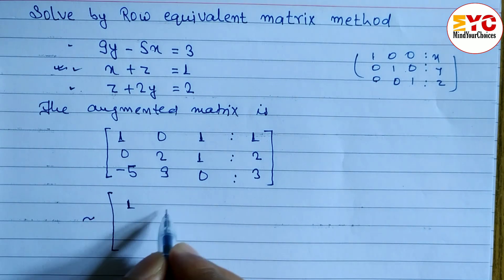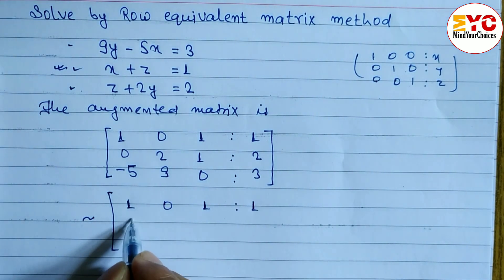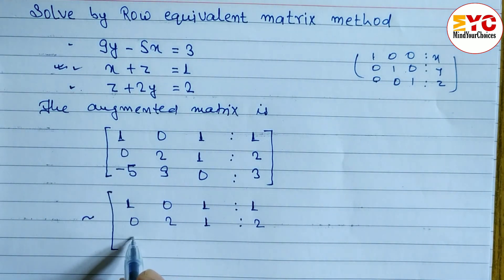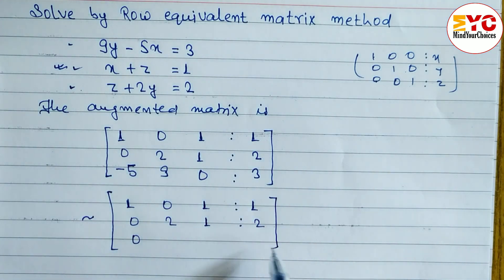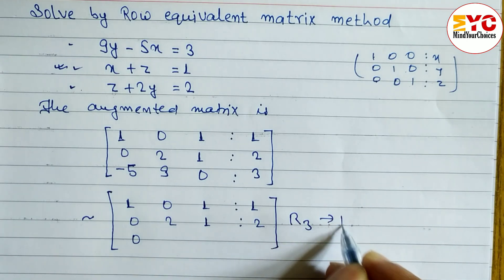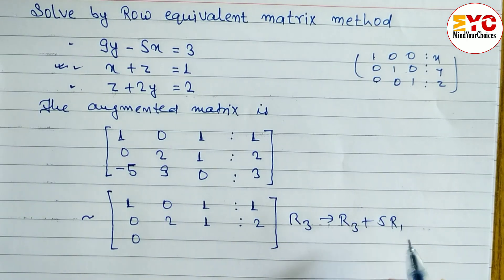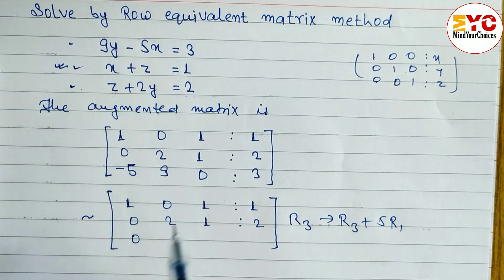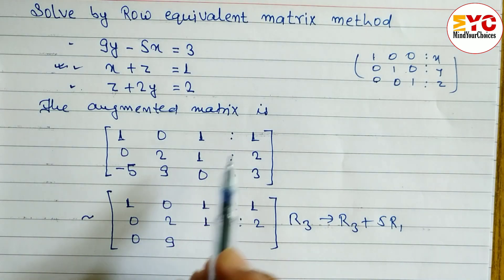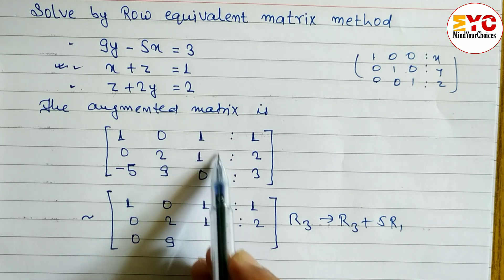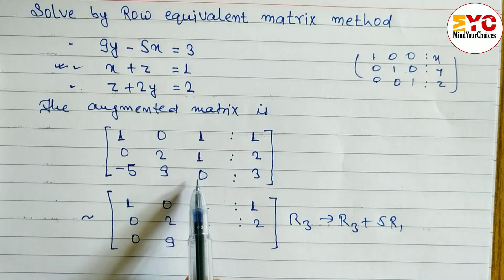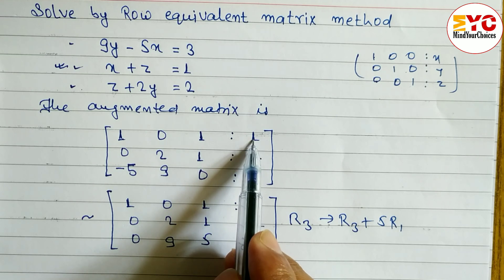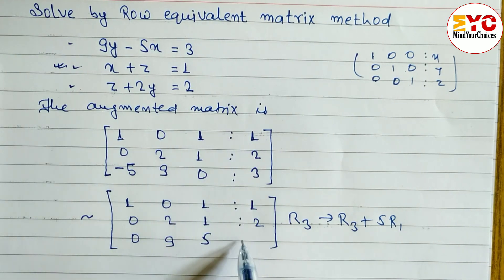Row 1 stays as: 1, 0, 1, 1. Row 2 stays as: 0, 2, 1, 2. For R3, we apply R3 → R3 + 5R1. Multiplying row 1 by 5: -5 + 5 = 0, 9 + 0 = 9, 0 + 5 = 5, and 3 + 5 = 8. So the new row 3 is: 0, 9, 5, 8.